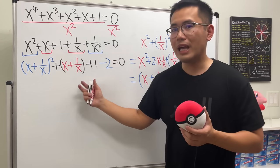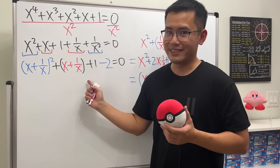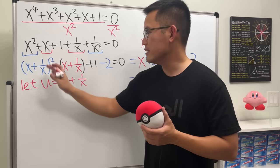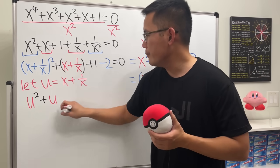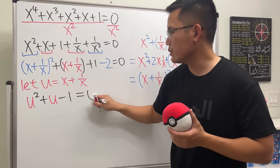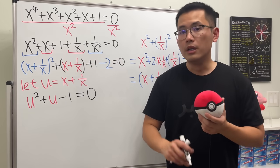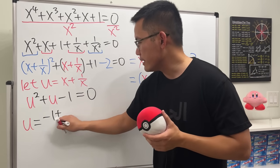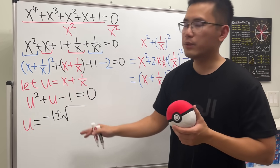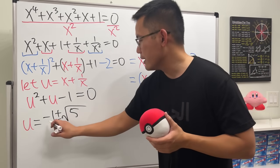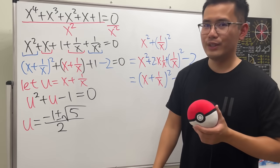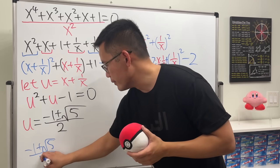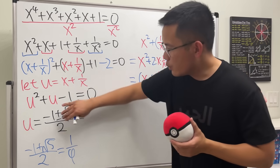We have a quadratic equation in terms of x plus one over x. Let u equal x plus one over x, so we get u squared plus u minus one equals zero. Applying the quadratic formula: u equals negative one plus or minus the square root of one plus four, all over two, which is negative one plus or minus the square root of five, over two. The positive case is the reciprocal of the golden ratio, and the negative case is the negative golden ratio.